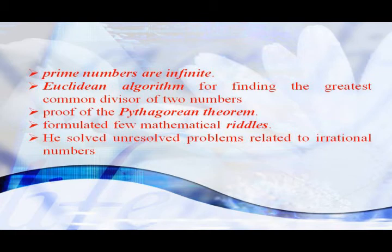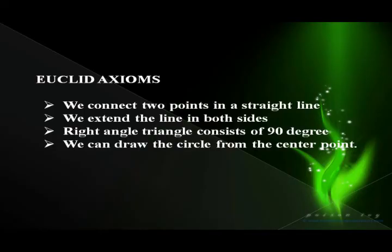He also discussed the Euclidean algorithm for finding the greatest common divisor of two numbers. He is credited with the well-known proof of the Pythagorean theorem. He also formulated three mathematical axioms.